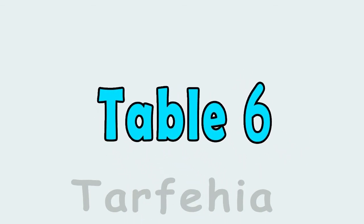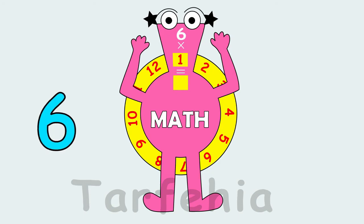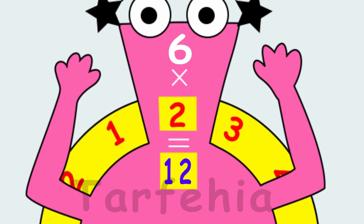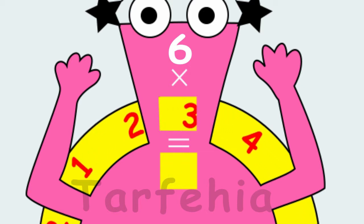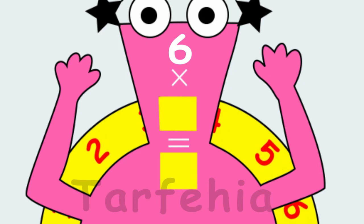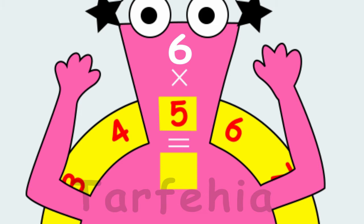Math. The table of six. Six times one equals six. Six times two equals twelve. Six times three equals eighteen. Six times four equals twenty-four. Six times five equals thirty.